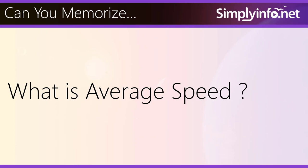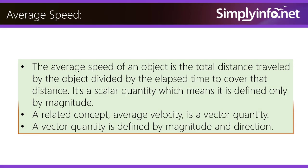So now can you memorize what is average speed? The average speed of an object is the total distance traveled by the object divided by the elapsed time to cover the distance. It's a scalar quantity which means it is defined only by magnitude. A related concept, average velocity, is a vector quantity. A vector quantity is defined by magnitude and its direction.